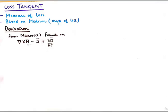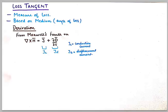That can be seen from Maxwell's fourth equation which is curl of H equals J plus del D by del T, where J is the conduction current and del D by del T is the displacement current. This is the lossy part of the propagating wave and this is the lossless part. So the ratio of Jc upon Jd will give me the measure of loss or the loss tangent.